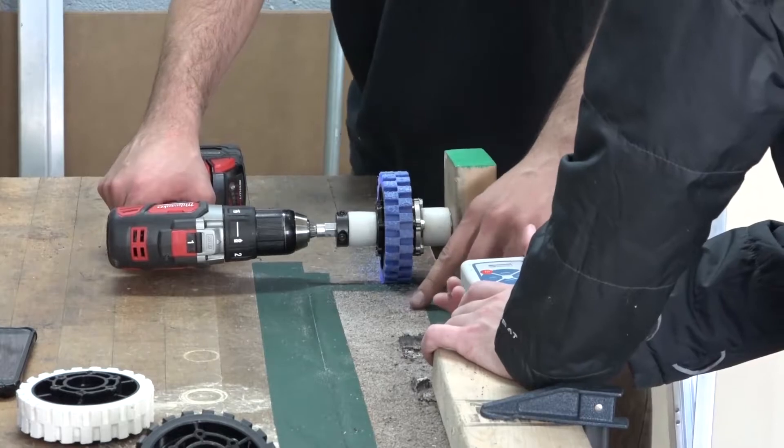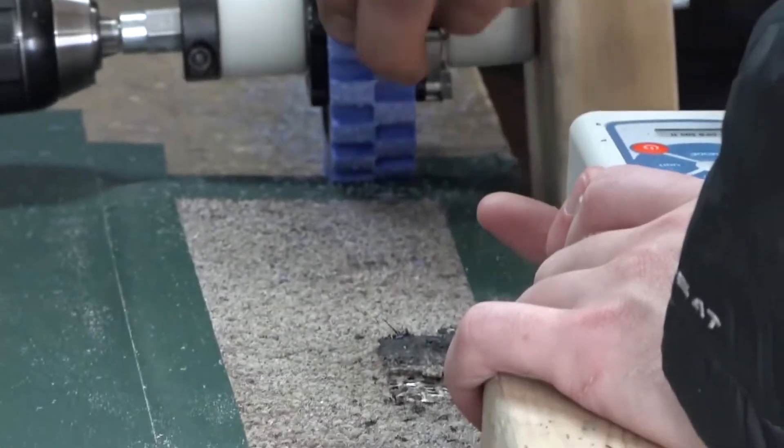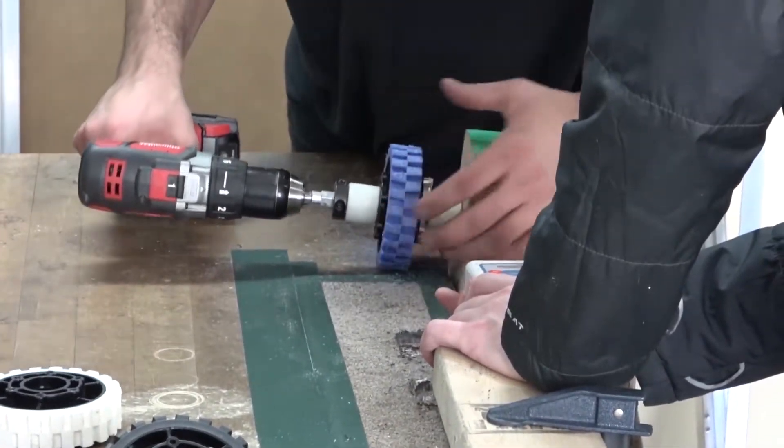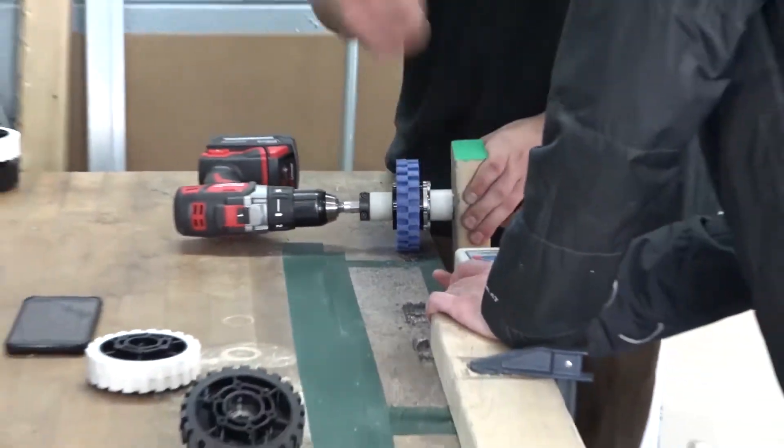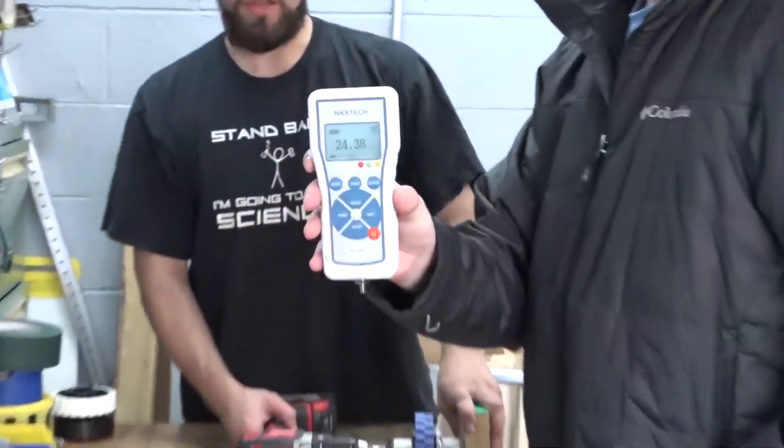A little bit of carpet melting there, some significant dust around the wheel, blue dust shot out behind it, and we've got a force reading of about 24 pounds.